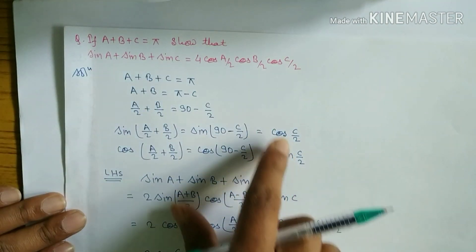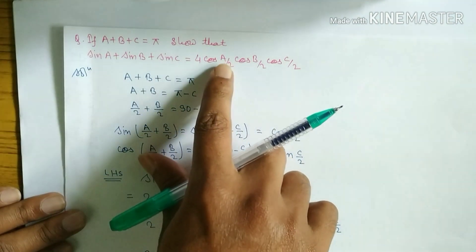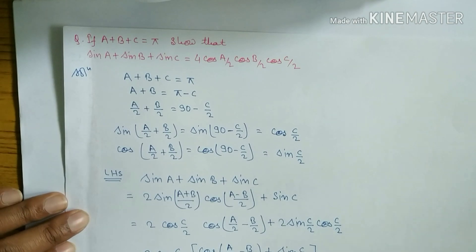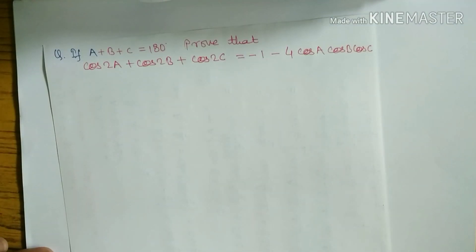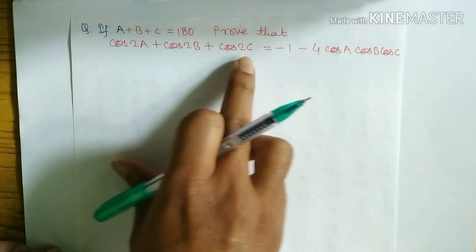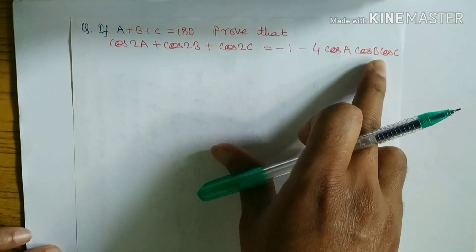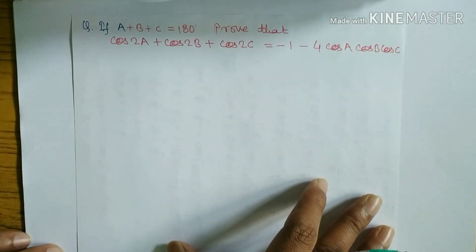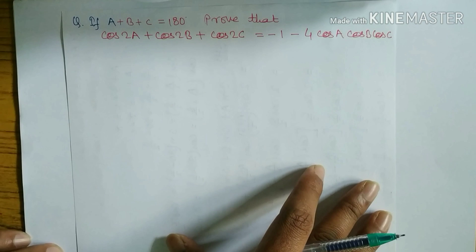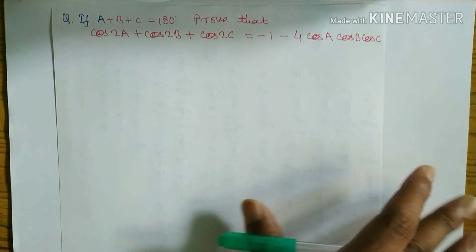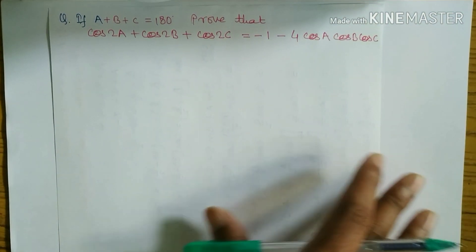In that previous question we had sine A, sine B, sine C with A/2, B/2, C/2. But today we have a different question — here it is 2A, 2B, 2C, and on the other side we have A, B, C, not A/2, B/2, C/2. So this question is different from yesterday's.